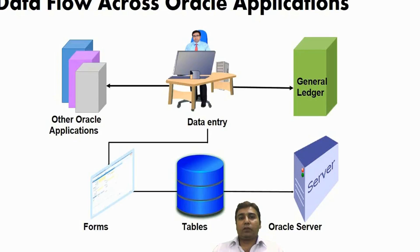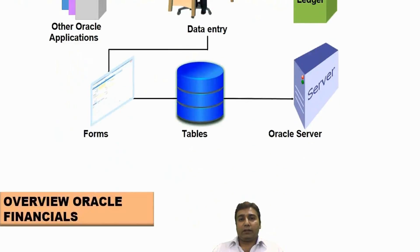For example, journal entries entered on the General Ledger are stored in tables named GL_JE_BATCHES, and supplier information in Oracle applications is stored in tables named PO_VENDORS. All these applications are stored on Oracle servers, where users can run them as and when required.